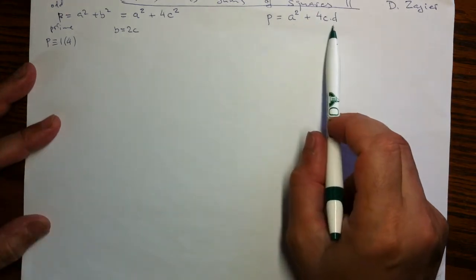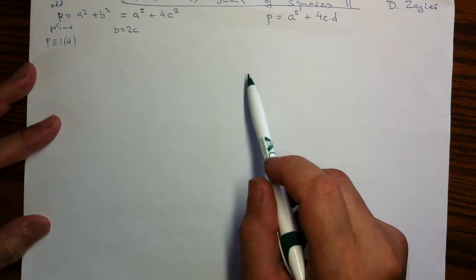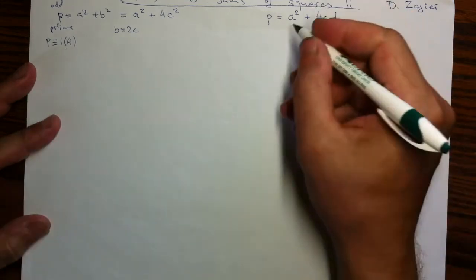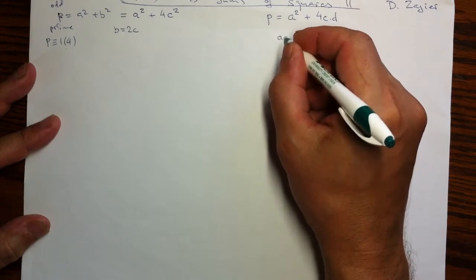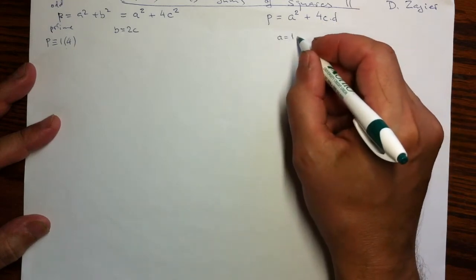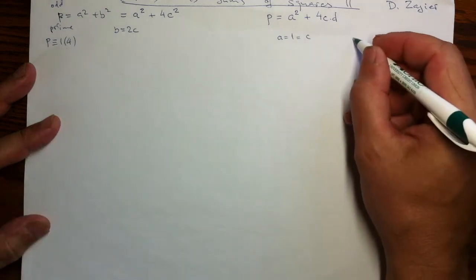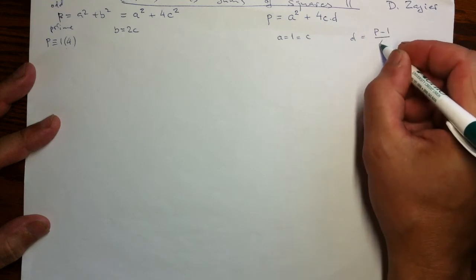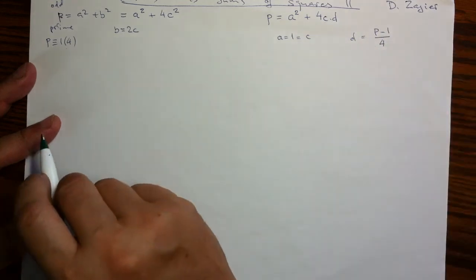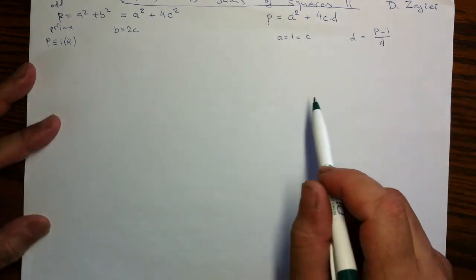So this is a new equation, now three unknowns. It always has a solution under this assumption. We can always choose A to be 1. So C times C, and then D will be that ratio, P minus 1 over 4. So by assumption, it is always a natural number.